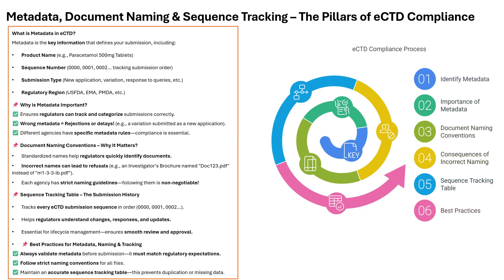Now let's talk about metadata, document naming and the sequence tracking table. Metadata is like an ID card for your submission — it tells regulators what is being submitted (new application, variation or response), which product it is for, the sequence number and where it fits in the submission timeline. Wrong metadata can lead to instant rejection. Next is document naming convention — name files clearly, for example 'M24-pharma-toxicology.pdf' indicating module section 2.4. Finally, the sequence tracking table acts as a submission log, helping regulators see what was submitted before, what's new and how previous queries were addressed. Master these and you're already on the path to smoother submissions.